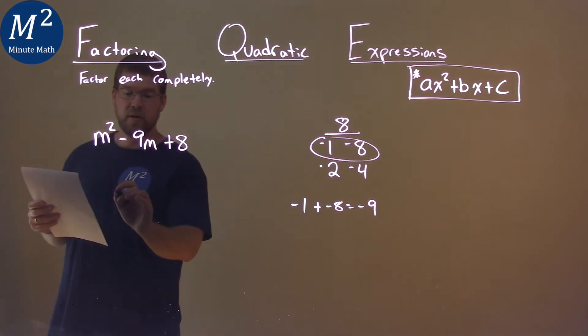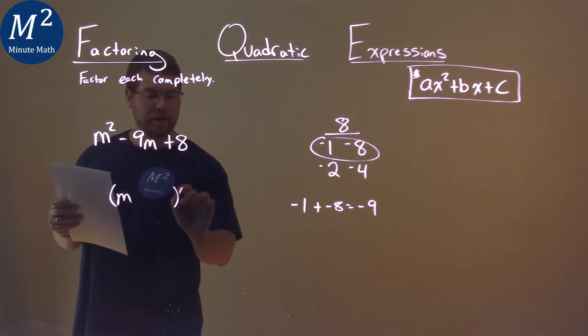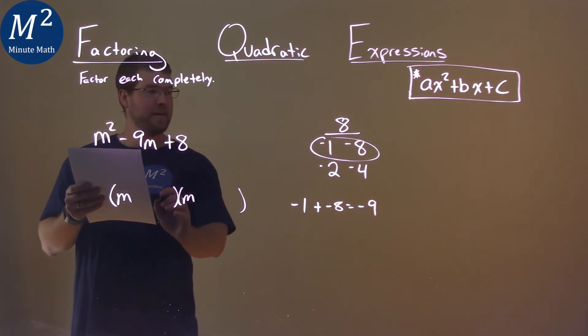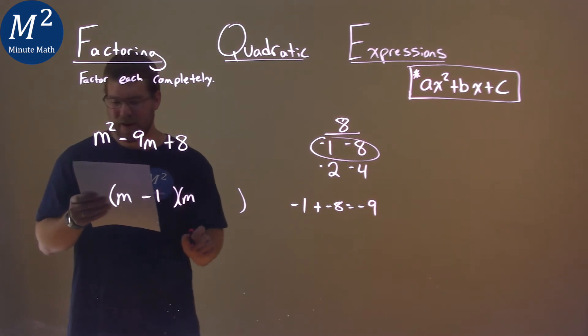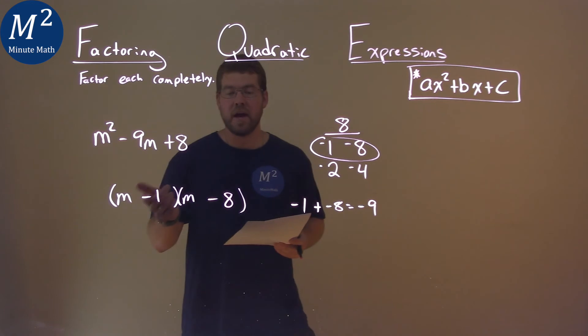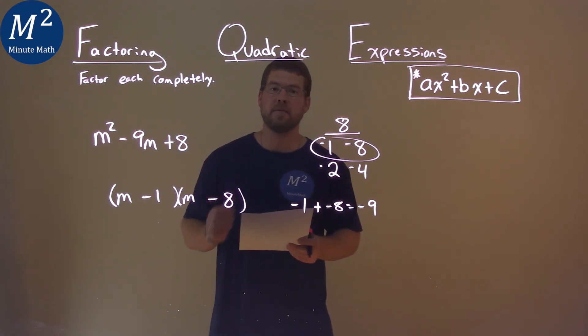So we use those numbers to get our answer here. We write this in our factored form. And here we put minus, minus the 1, I almost put a 2, minus the 1 and minus the 8. And so our final answer here is just m minus 1 times m minus 8.